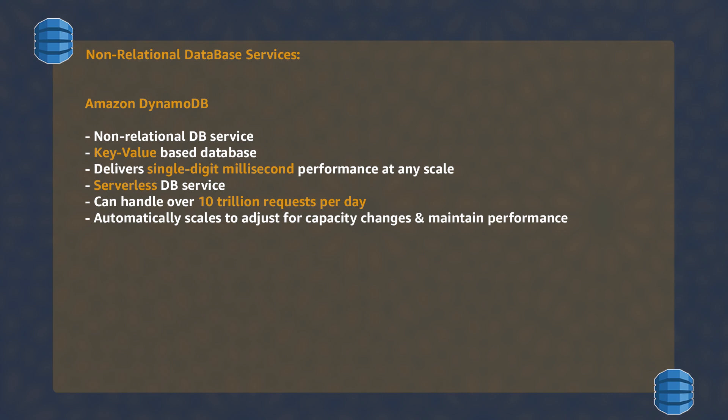Amazon DynamoDB is a managed serverless non-relational database service from AWS. It structures the data in the form of key-value pairs. It can deliver single-digit millisecond performance to any scale and can tolerate over 10 trillion requests per day.